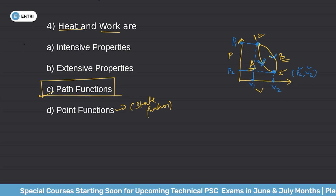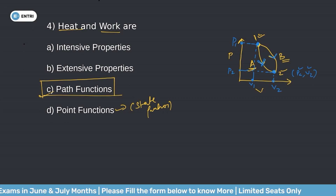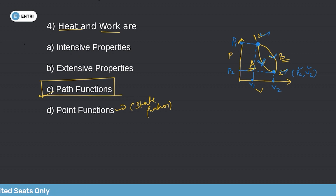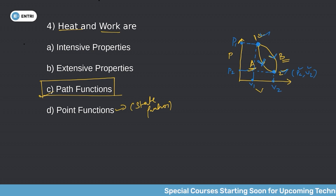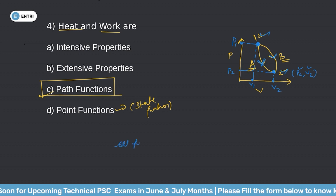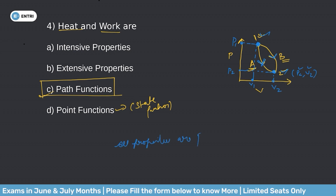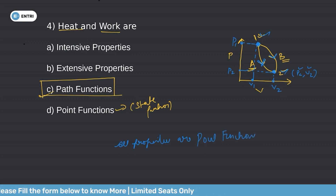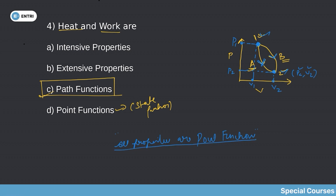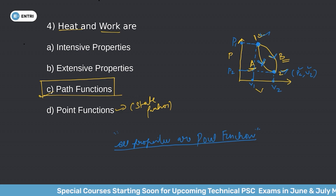Pressure and volume are examples of point functions. All thermodynamic properties — both intensive and extensive — are point functions. This is an important statement: all properties are point functions. Heat and work, however, are not properties; they are path functions.